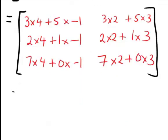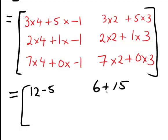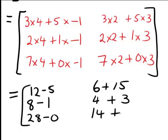Now it's just a matter of ordinary algebraic simplification, so the first one becomes 12 minus 5. The next one, 3 by 2 plus 5 times 3 is 6 plus 15. 2 by 4 plus 1 times negative 1 is 8 minus 1. 2 times 2 plus 1 times 3 is 4 plus 3. The last element here, 28 minus 0. And this one will become 14 plus 0.